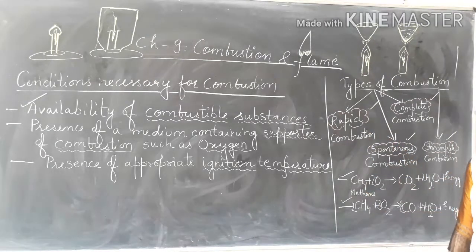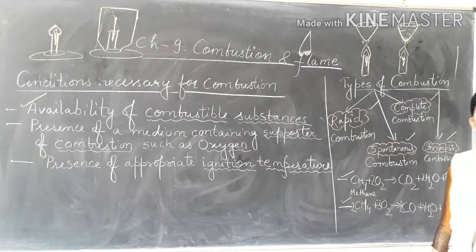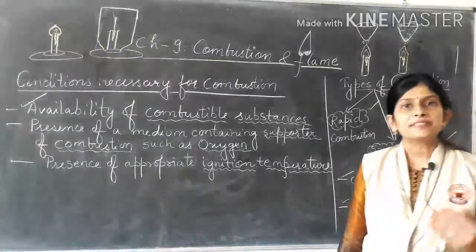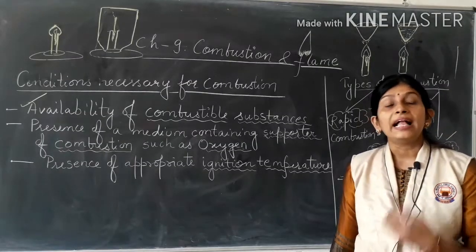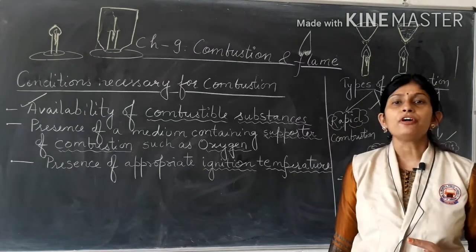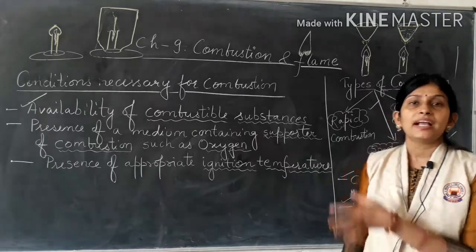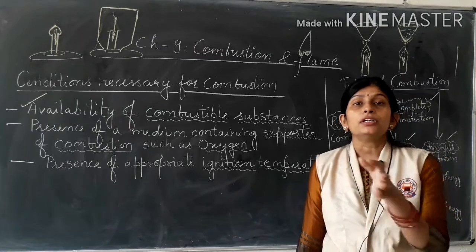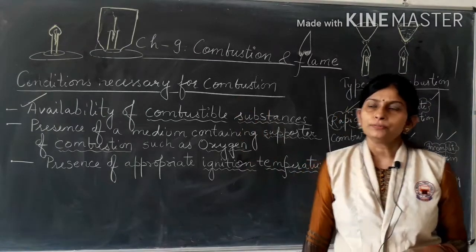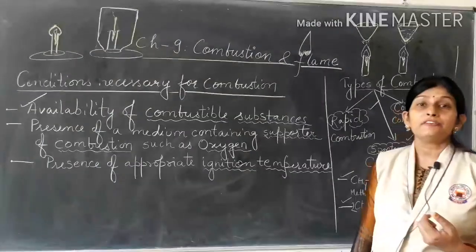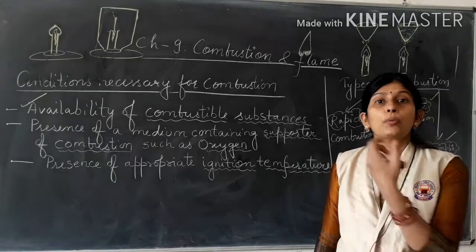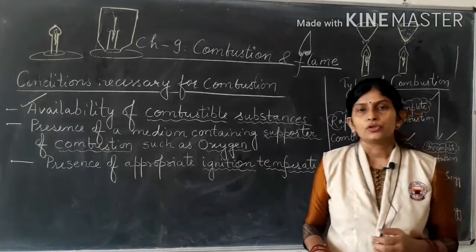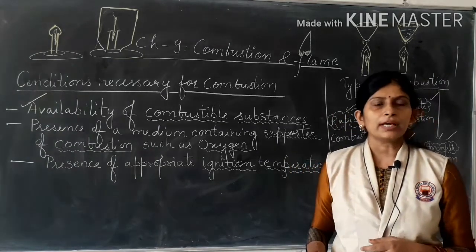First, let us discuss rapid combustion. What is rapid combustion? Rapid means fast, quick. It is a kind of combustion in which a substance catches fire or burns rapidly and quickly in the presence of oxygen to produce heat and light.